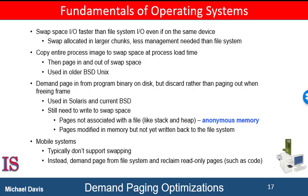This method appears to be a good compromise, and it's used in several systems including Linux and BSD Unix. Mobile operating systems typically do not support swapping. Instead, these systems demand page from the file system and reclaim read-only pages such as code from the applications if memory becomes constrained.